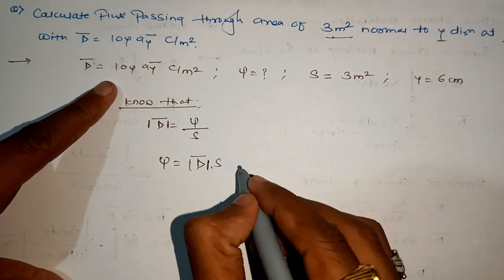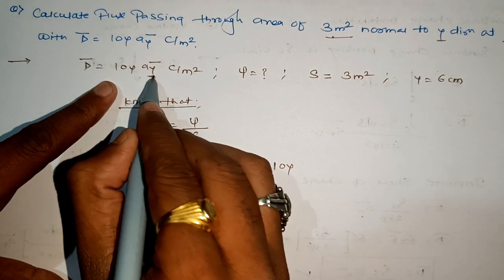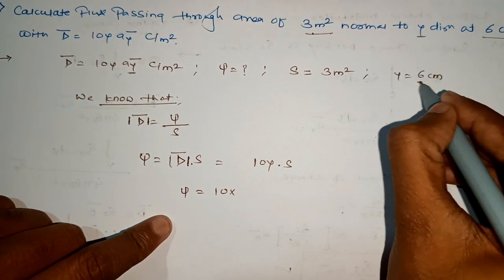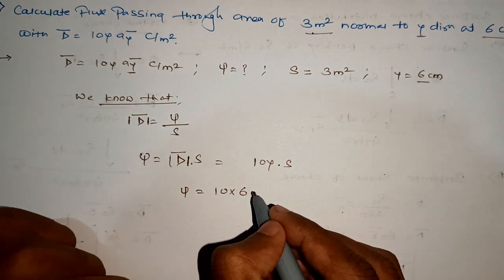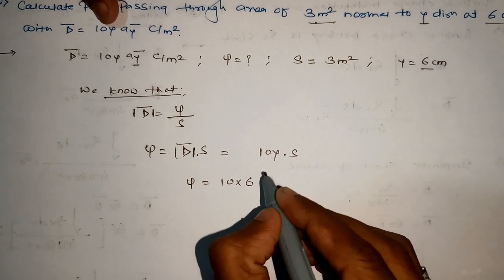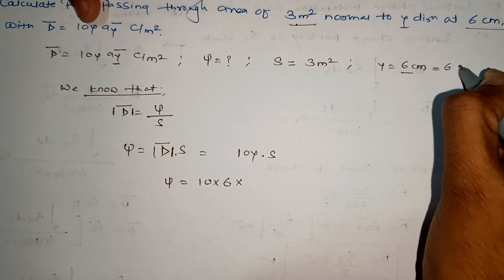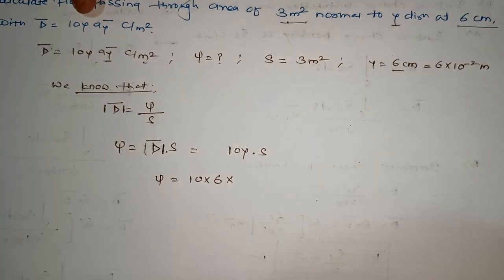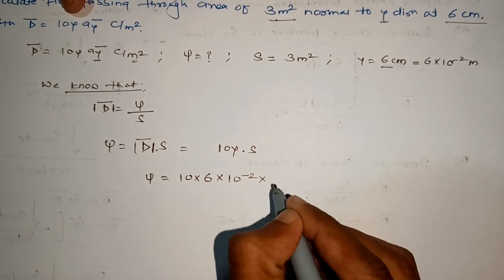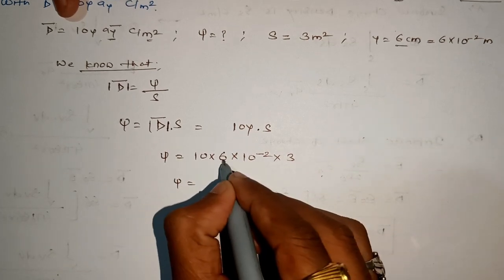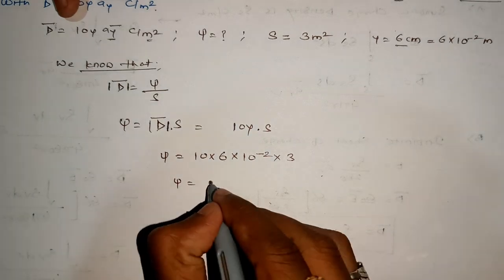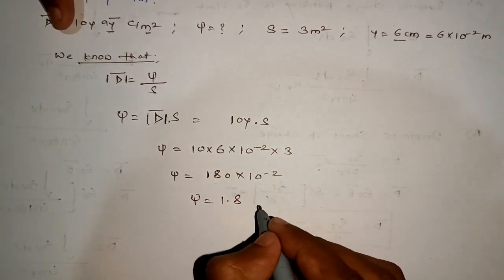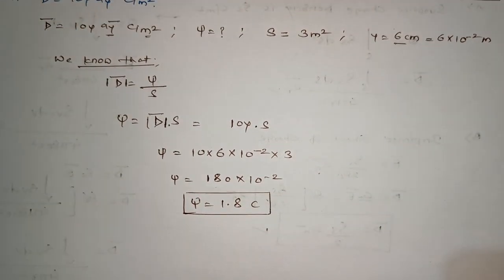Taking the magnitude of D-bar, the direction component goes away and we get psi = 10 · y. Since y = 6 centimeters, we convert to meters: 6 × 10⁻² meters. Multiplying by surface area 3: 10 × 6 × 10⁻² × 3 = 18 × 10⁻¹ × 10 = 1.8 coulombs. So the flux passing through is 1.8 coulombs.